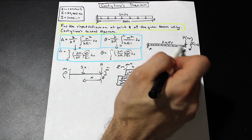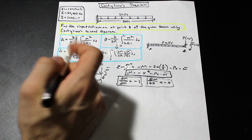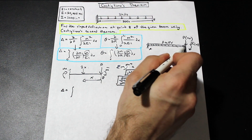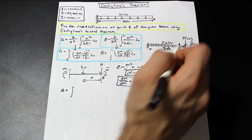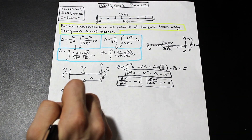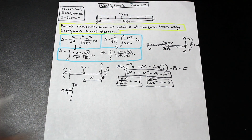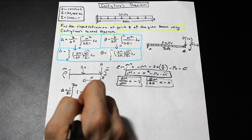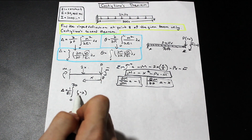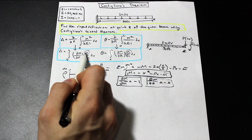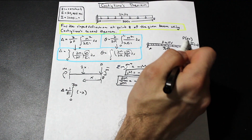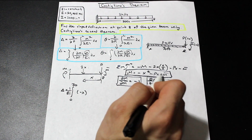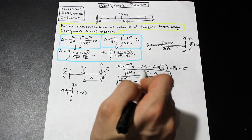For deflection, since we only have one span, there's only one integral term. The limits are 0 to 30 (feet), with origin at B. Moving 1/EI outside the integral, we have ∂M/∂P = −X multiplied by M. Since P and M̄ are both zero (fictitious), plugging those in eliminates those terms, leaving M = −X². The integrand becomes (−X)(−X²) = X³.